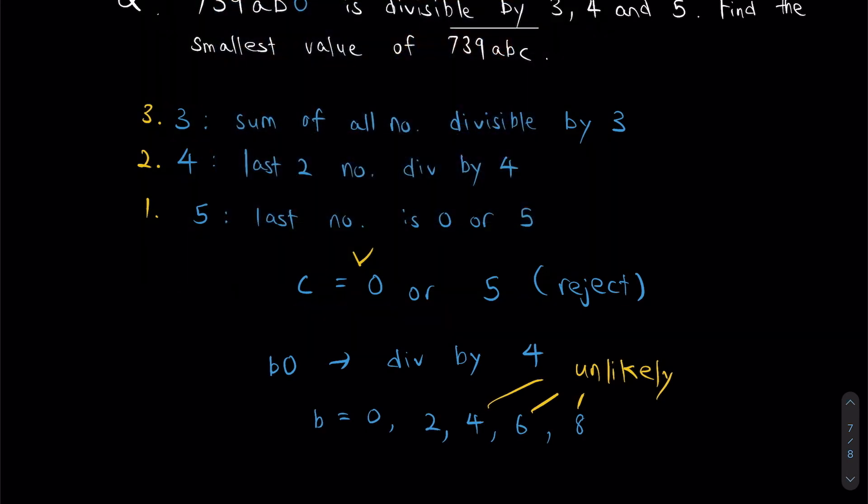Finally, let's look at the divisibility of 3. So what we do? We add everything together. 7 plus 3 plus 9 plus A plus B plus 0. This will give me 19 plus A plus B. This right here, this entire thing, 19 plus A plus B must be divisible by 3.